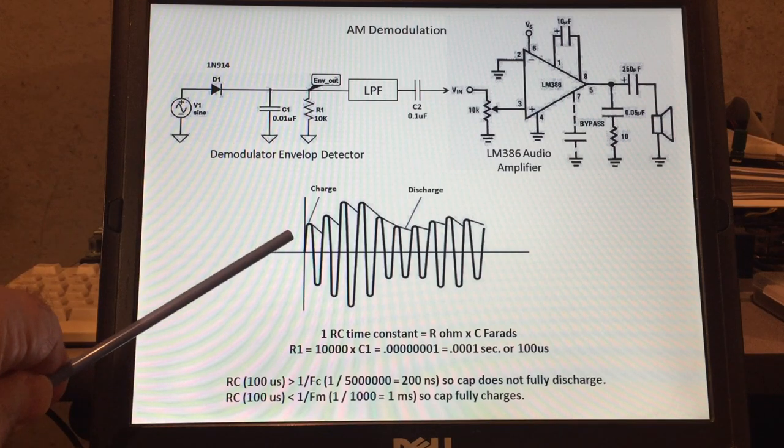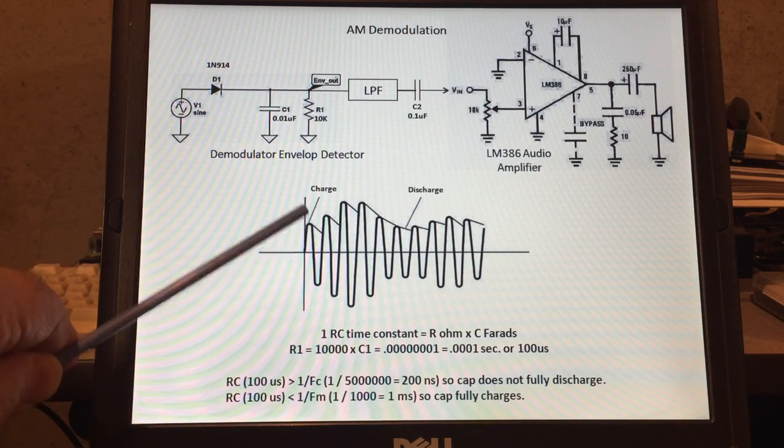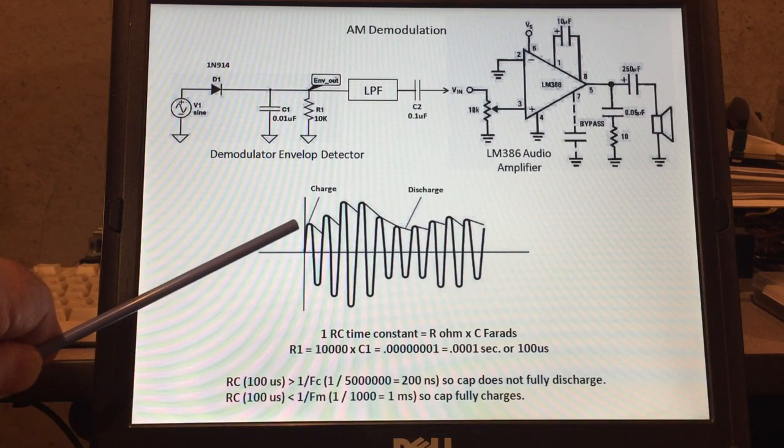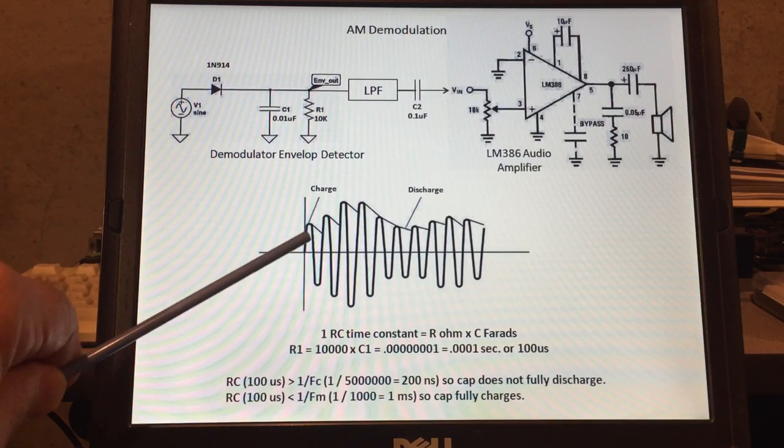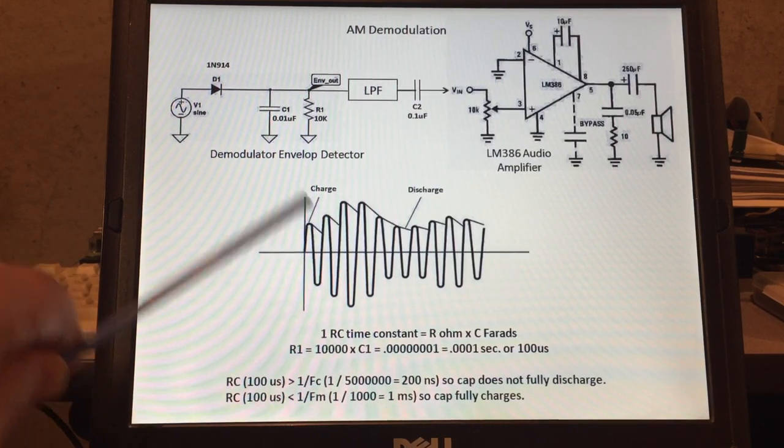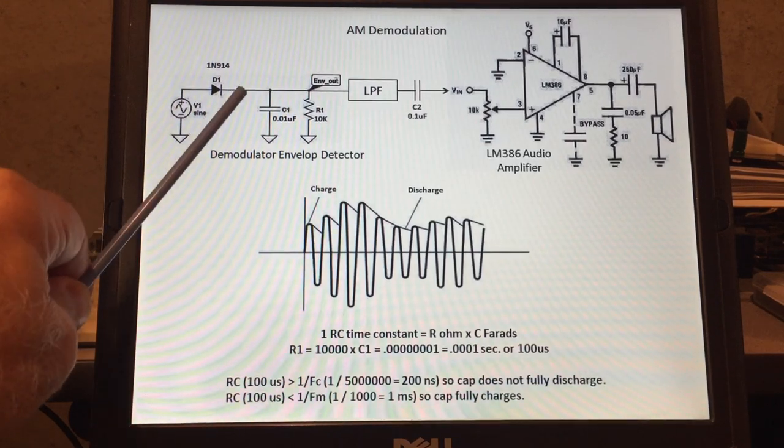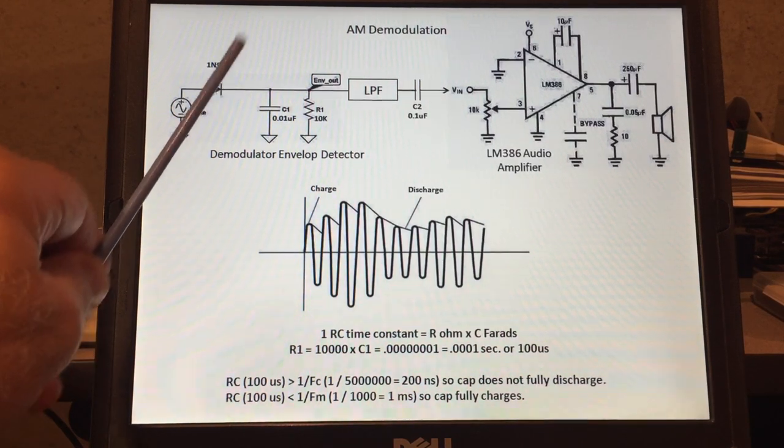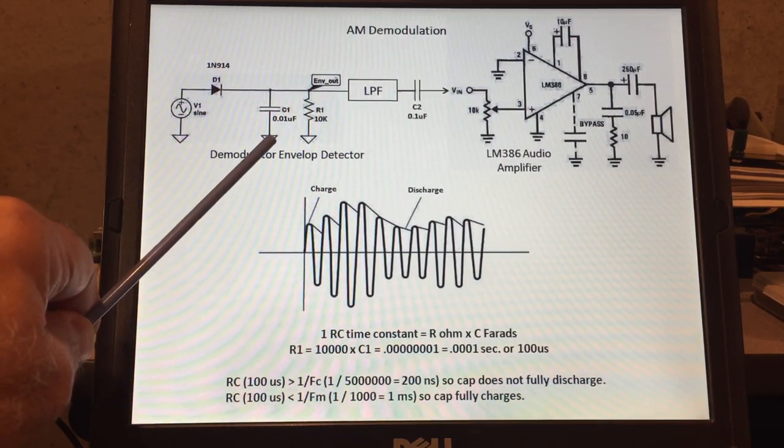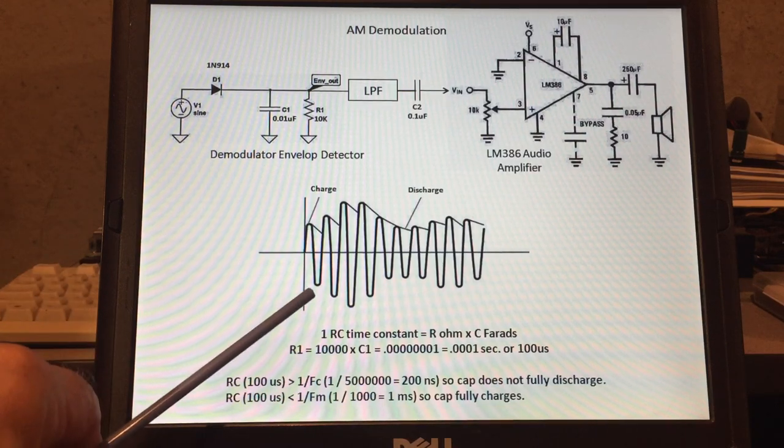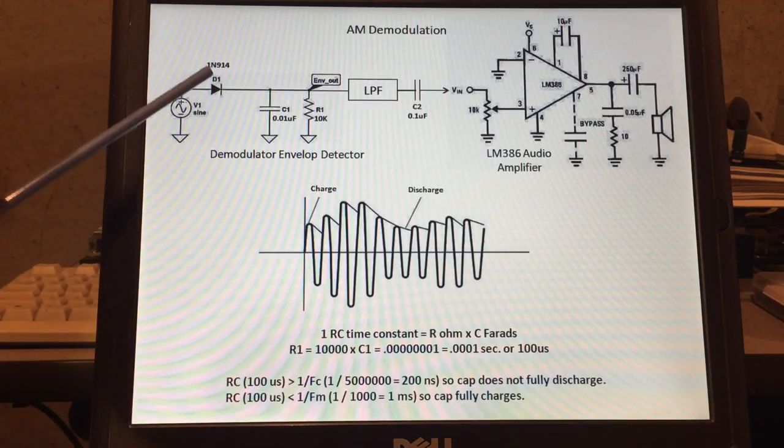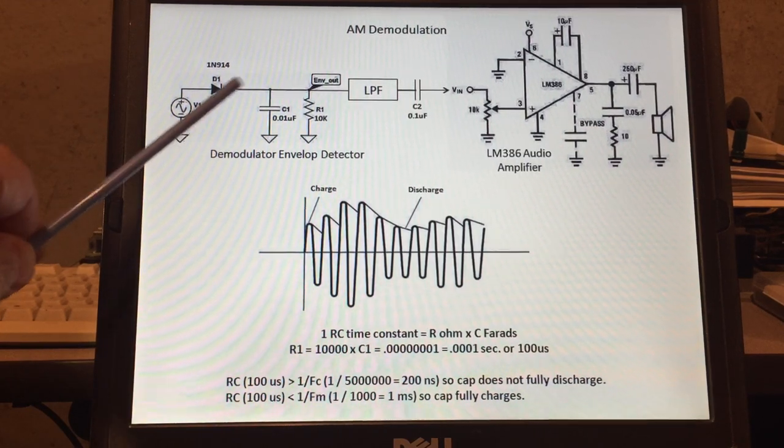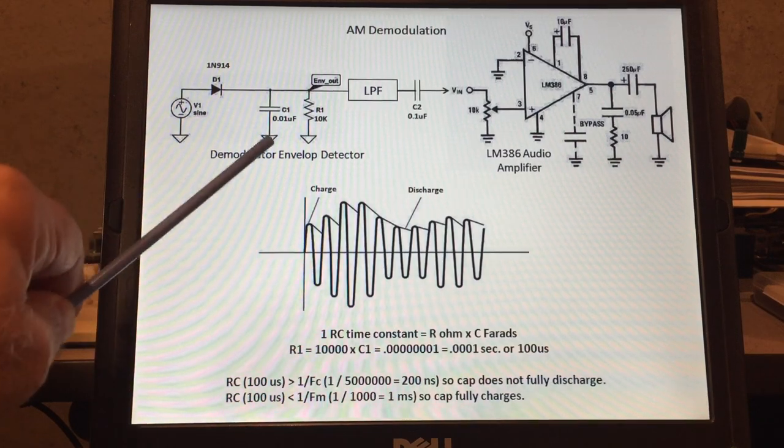Basically we're showing the carrier wave and we're showing the modulated signal here which again is just the one kilohertz tone. During the positive amplitude of the carrier wave this diode is forward biased. So basically the diode acts as a closed switch and that charges up C1 and then during the negative amplitude of the carrier this diode is reversed biased so it acts like an open switch and this capacitor discharges through R1.